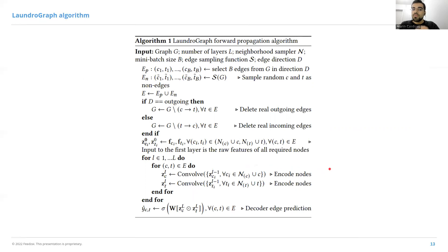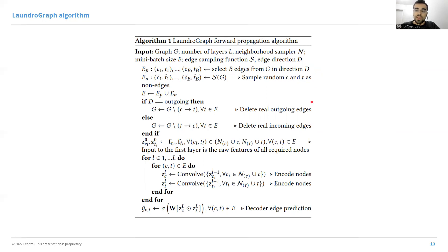This is the algorithm for our model. We receive as input a graph, the number of GNN layers, a neighborhood sampling function that extracts the computational subgraphs for a specific set of seed nodes, mini-batch sizes, an edge sampling function which dictates our labels, and an edge direction or type we're trying to predict. The first step is to sample our positive and negative labels. We then delete the real edges for that direction to avoid data leakage. We apply multiple layers of graph convolution operators to produce representations, and finally use the decoder to obtain the probabilities of the sampled edges existing.